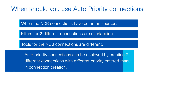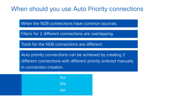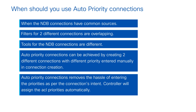If you do not create an auto priority connection, this can be achieved by creating two connections with different priorities assigned manually. But the intent of auto priority connections is to remove the hassle of assigning priorities manually. The NDB controller will automatically assign ACL priorities without the user needing to specify any priorities on the connection.